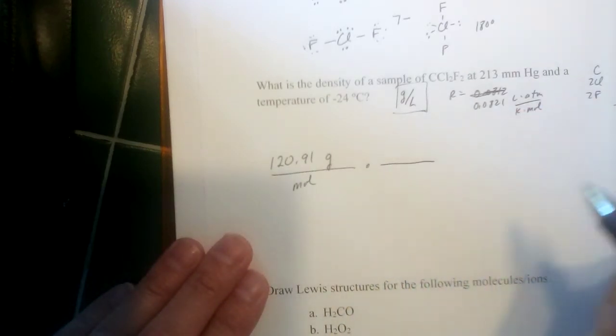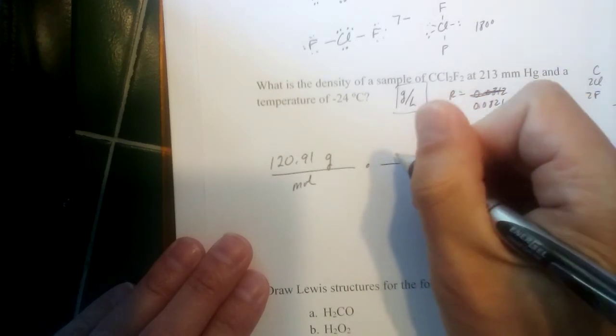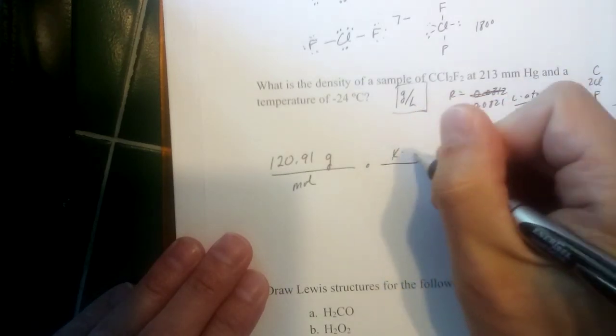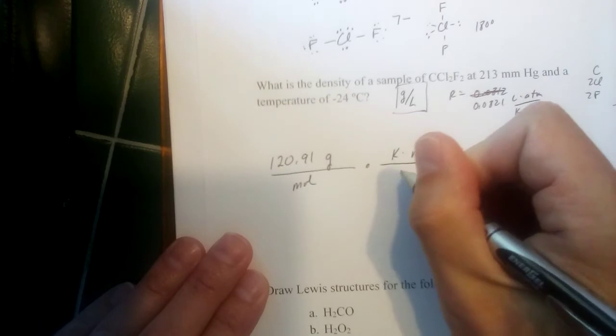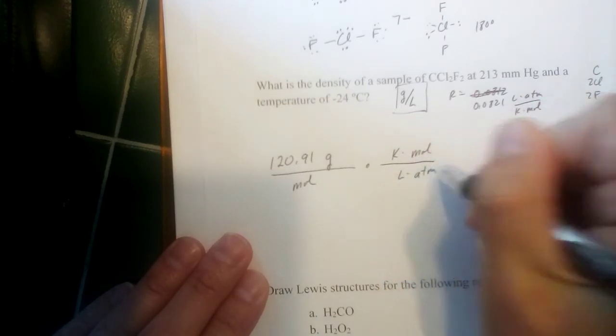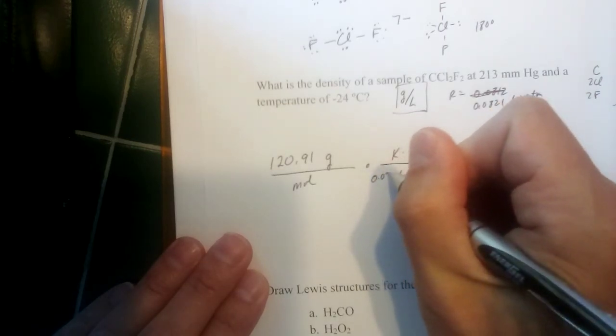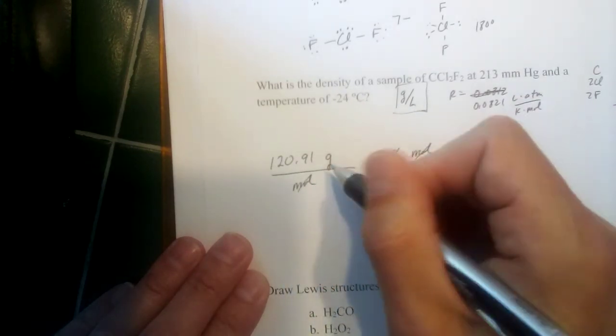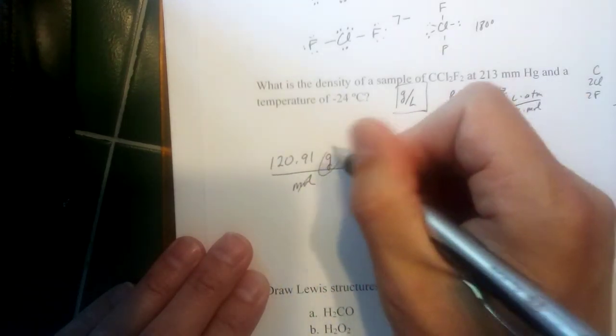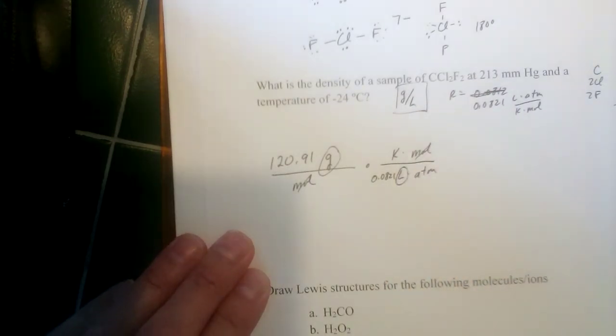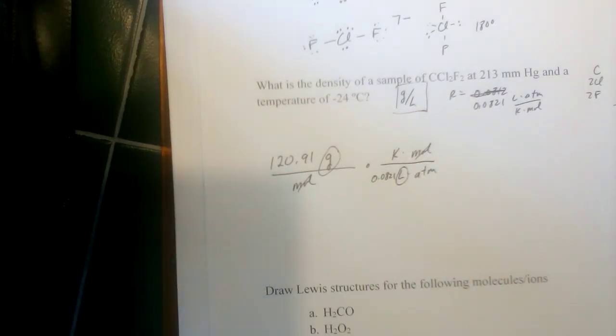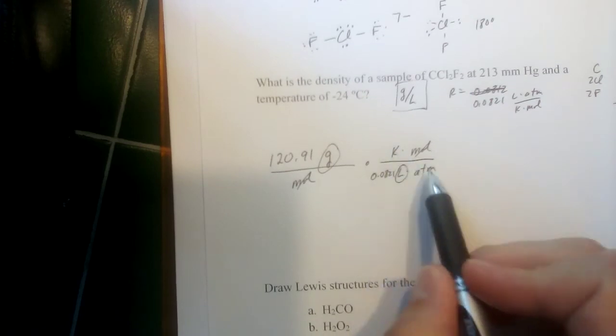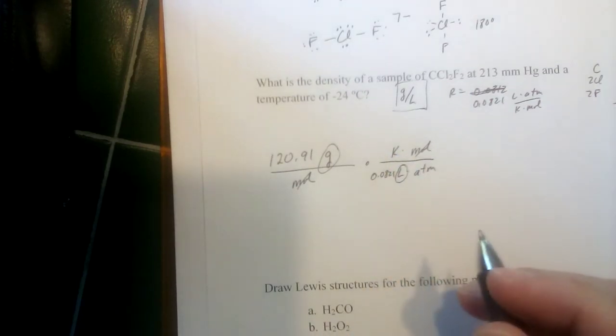Now what I need to do is cancel out moles and maybe introduce liters on the bottom. Well, both of those are in the gas constant. And if I flip the gas constant over and I put Kelvin moles on top and liter atmospheres on the bottom, so that means the 0.0821 would be on the bottom. That cancels out moles, right? And it introduces liters. I've got grams on top. I've got liters on the bottom. I've got the units I want for my answer. The only difficulty now is I have some units I don't want. I've got Kelvins. I've got atmospheres.